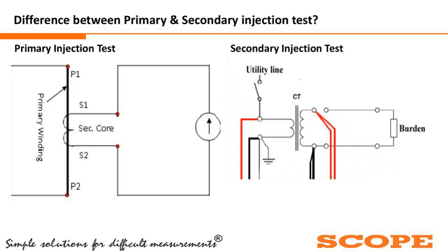Secondary injection means whatever parameters we are checking or whatever injection is done from the secondary side of the current transformer. Here you can see the CT core and the utility line — P1 and P2. In the secondary side we inject a small amount of current or voltage to check the excitation current or ratio. To check the ratio we inject some voltage from the secondary side and accordingly check whatever voltage appears from the primary side — but this is not a direct method to calculate the ratio of the CT. So secondary injection is an indirect method, whereas primary injection is the direct method to check the CT ratio relationship.